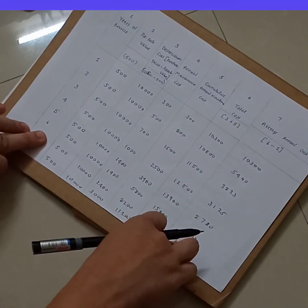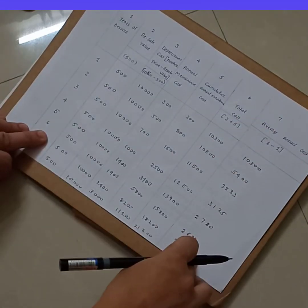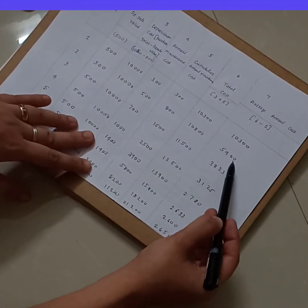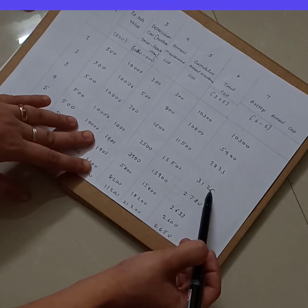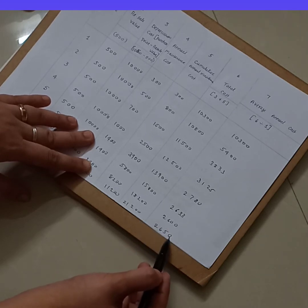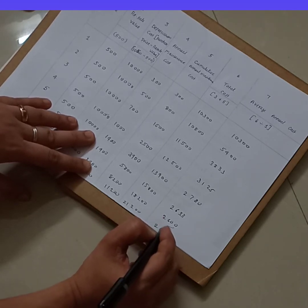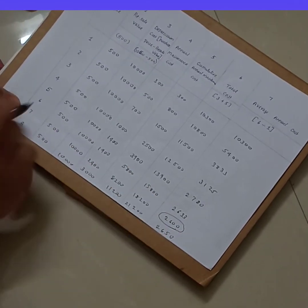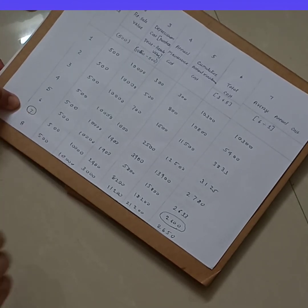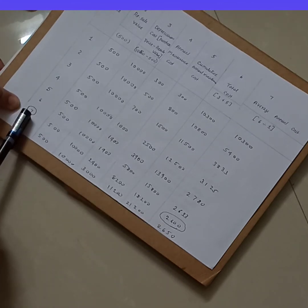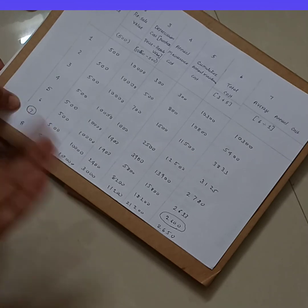Now we need to find the optimum replacement period. Look at the last column — average annual cost. The lowest value is 2,600, which corresponds to the 7th year. So the 7th year appears to be the optimum replacement period, but we cannot confirm it unless we check it against the replacement policy.